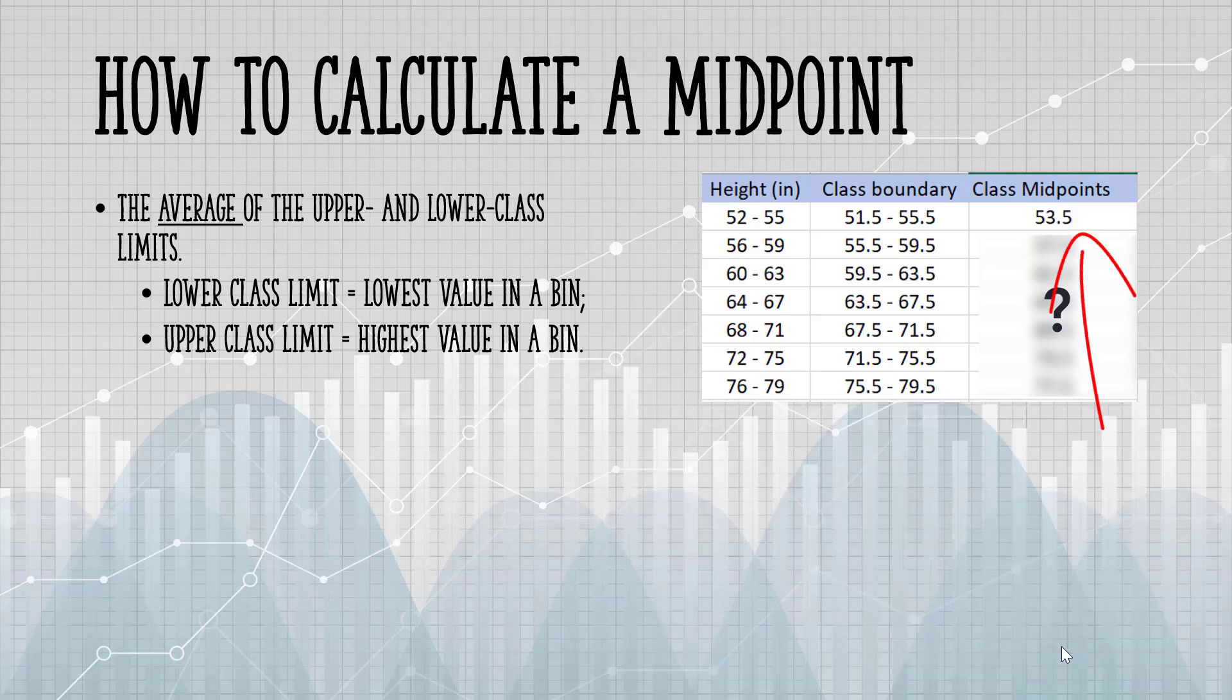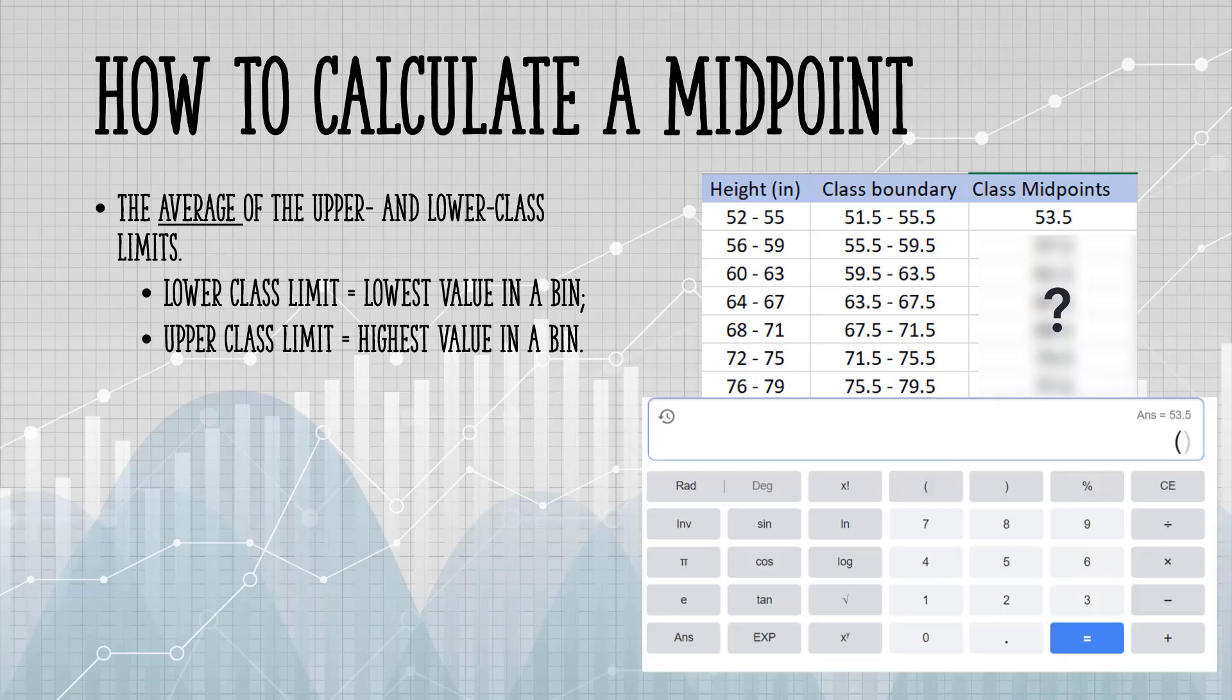For the second row, we're going to do the same thing. We're going to add our upper and lower limits of 56 and 59 and divide by 2. That gives us our second midpoint of 57.5.